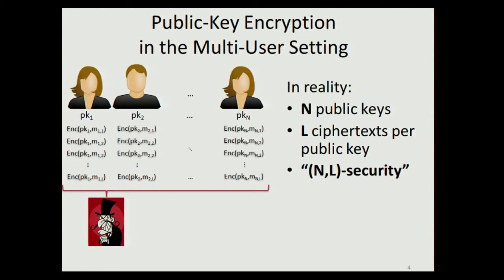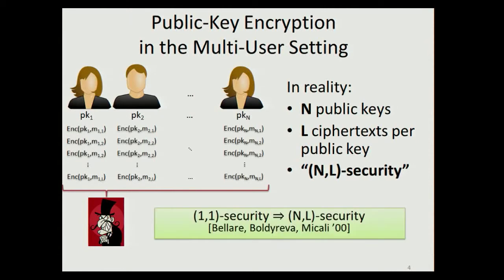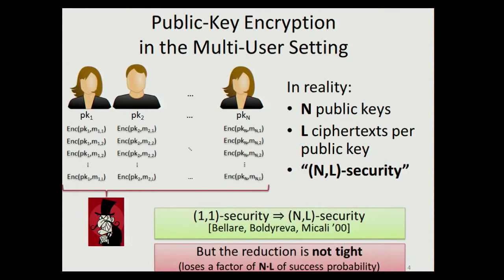What we actually need in practice is (n,l)-security. This is not a problem because (1,1)-security implies (n,l)-security — a simple and well-known fact whose proof can be found in a paper by Bellare, Boldyreva, and Micali. But unfortunately the reduction is not tight: going from (1,1)-security to (n,l)-security we lose a factor of n times l in the success probability. In the asymptotic setting this is a polynomial and not a problem, but in the concrete security setting we must take this security loss into account.